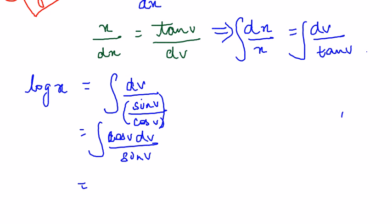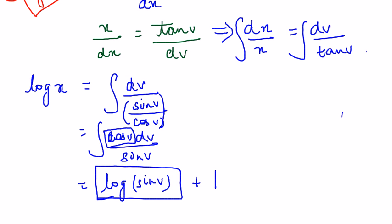So cos v by sin v dv integration is easy. It is nothing but log of sin v. How do we know? Because 1 by sin v integration is ideally log sin v. And you have to differentiate sin v to see if that is there in the numerator. So differentiation of sin v is cos v and that is there in the numerator. So it becomes log sin v plus a constant which we write as log c.